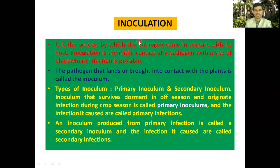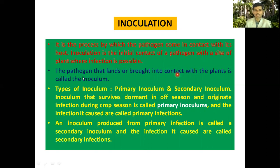Now the seven major events that occur during disease development. The first event is inoculation — it is the process by which the pathogen comes in contact with its host. Inoculation means the initial contact of the pathogen with the site of the plant where infection is possible. The pathogen that lands on or is brought into contact with that site is called the inoculum.